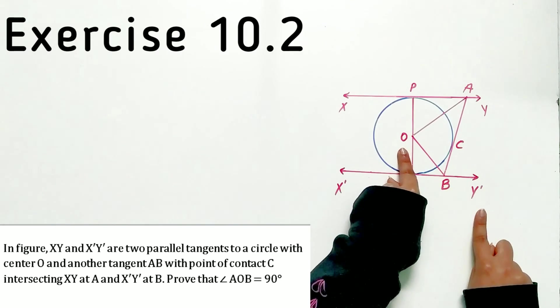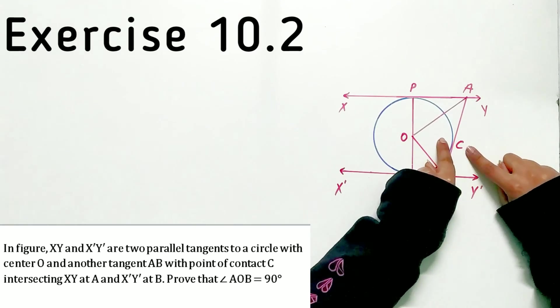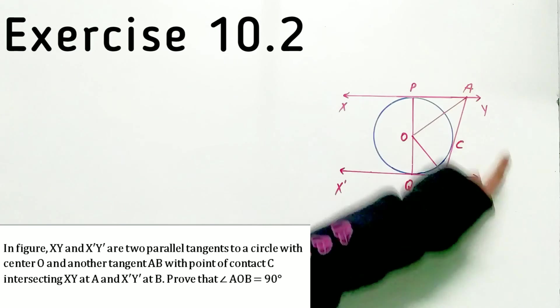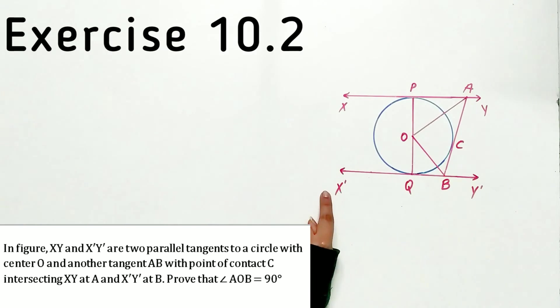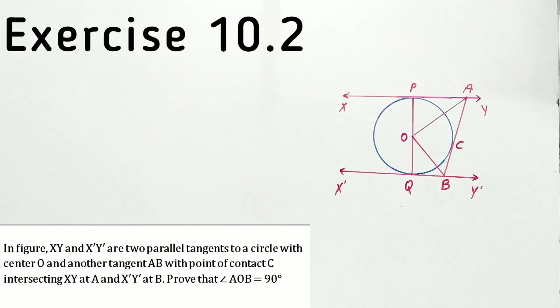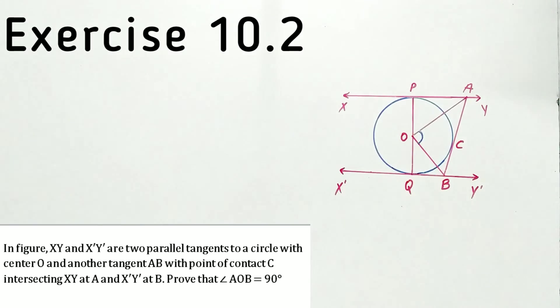Another tangent AB with point of contact C intersecting XY at A and X'Y' at B. We have to prove that angle AOB is equal to 90 degrees.